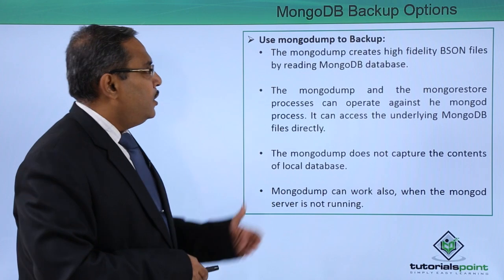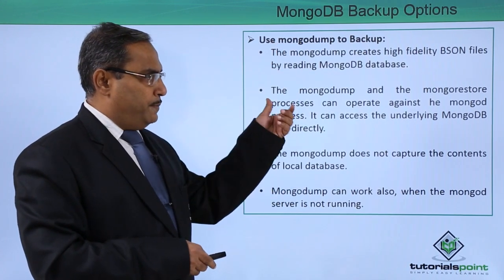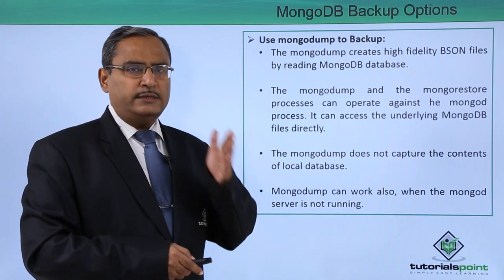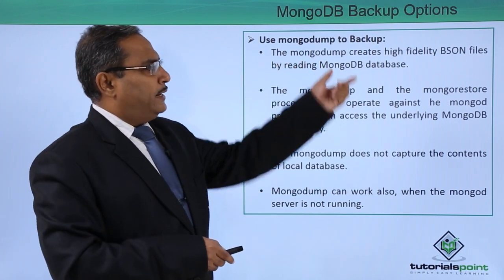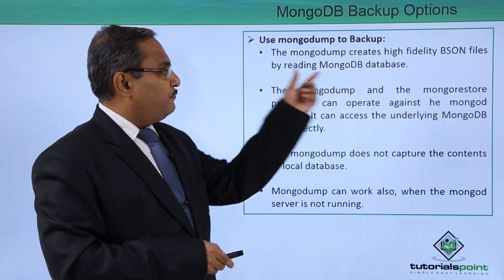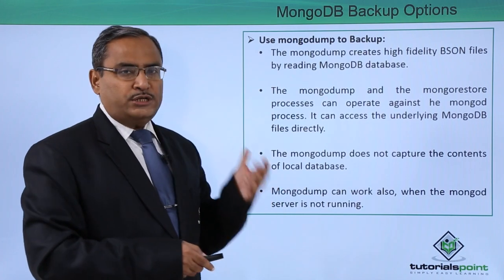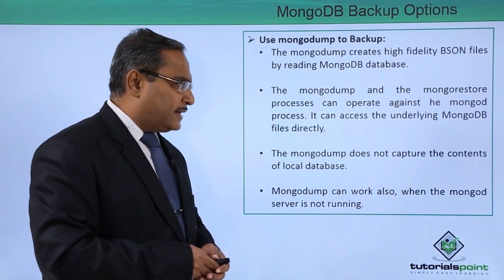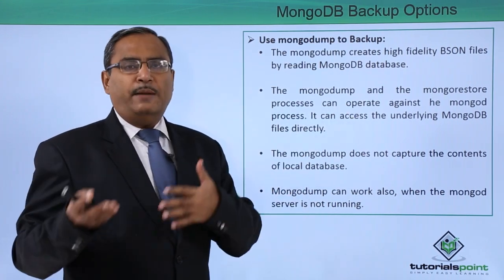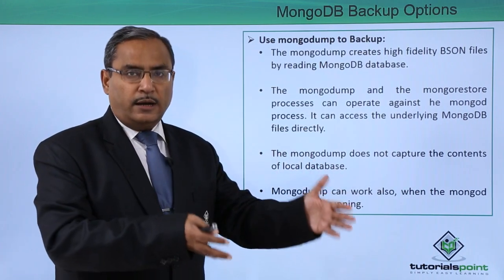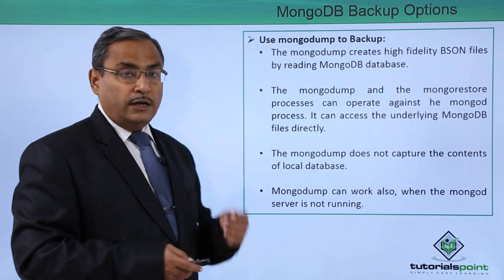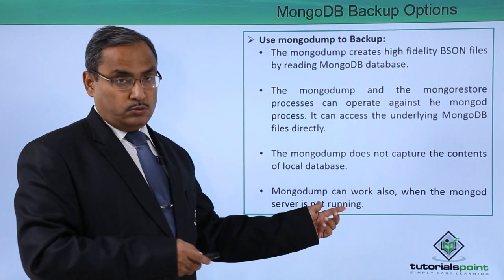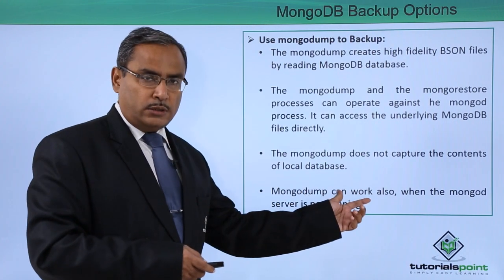The last option is MongoDump for backup. MongoDump creates high-fidelity BSON files by reading the MongoDB database. BSON means binary JSON — binary JavaScript Object Notation. Two commands are available: MongoDump and MongoRestore. These processes can operate against the MongoD process and can access underlying MongoDB files directly. MongoDump means you are taking the backup, and MongoRestore means from the backup you are again restoring the MongoDB files. MongoDump does not capture the contents of local databases — it deals with the global database only. MongoDump can also work when the MongoD server is not running.